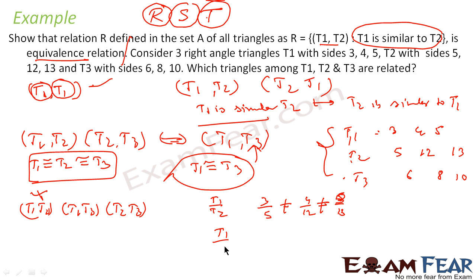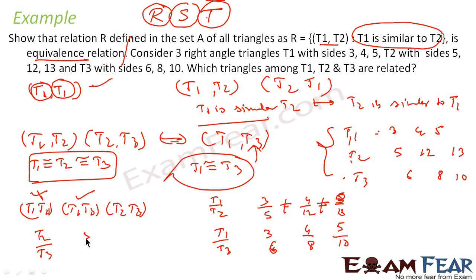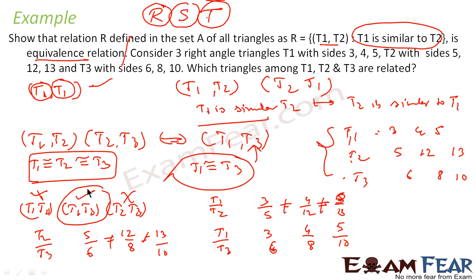Comparing T1 and T3: sides are 3 and 6, 4 and 8, 5 and 10 — every ratio is 1/2, so they are related. Comparing T2 and T3: sides give ratios 5/6, 12/8, and 13/10 — the ratios are not the same, so they are not related. Therefore, the only two triangles that are related are T1 and T3.